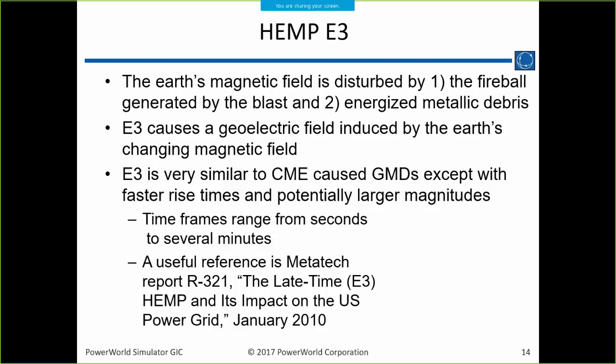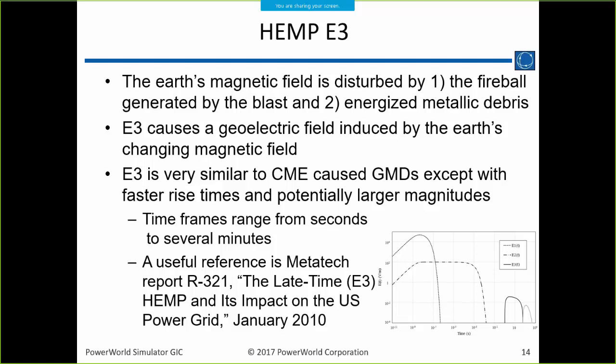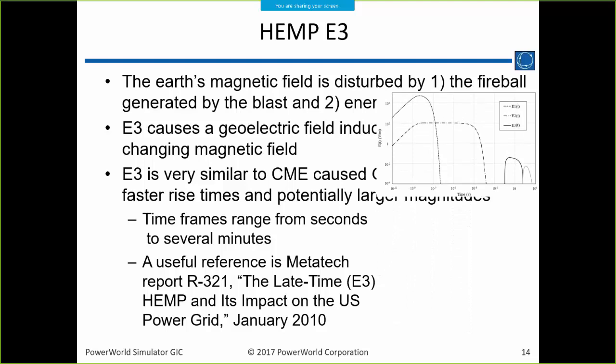That brings us to E3. The GICs produced by E3 are very similar to what's produced by a coronal mass ejection. Here it's caused by a nuclear explosion perturbing the Earth's magnetic field, inducing geoelectric fields from the changing magnetic field — so it's very similar. It could be stronger, but it has a shorter time period.